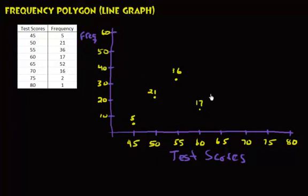65, we had 52—that's way up here. Score of 70, we had 16—about right there. 75, we had 2. And 80, we had 1.